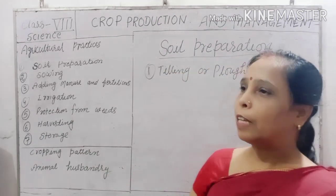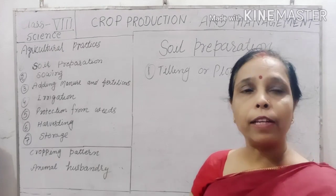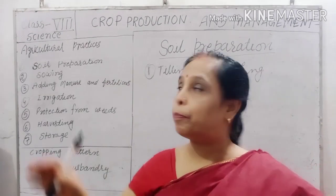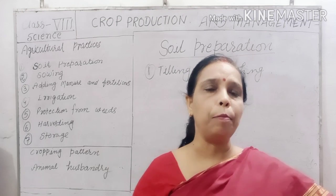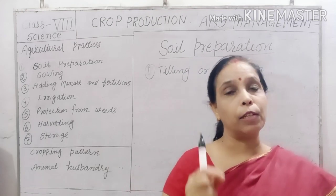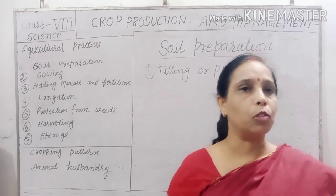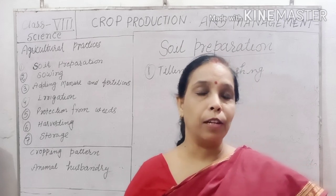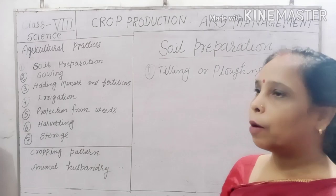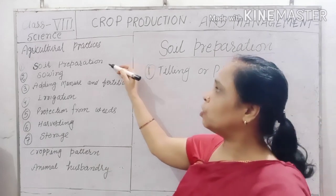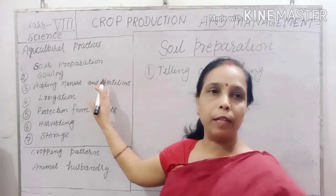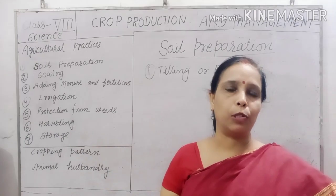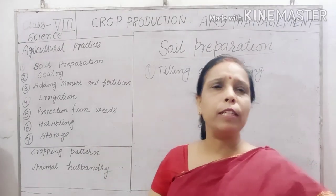In this video, we will learn how to do agriculture. Various agricultural practices means various activities and tasks which are needed for agriculture. These include: soil preparation, sowing, adding manure and fertilizer, irrigation, protection from weeds, harvesting, and storage.